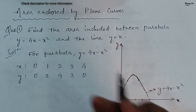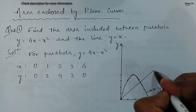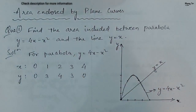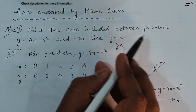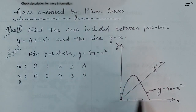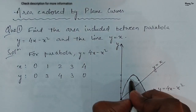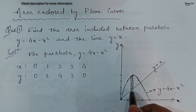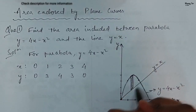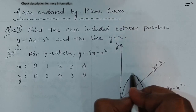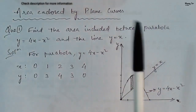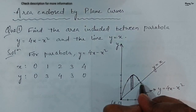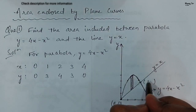Here you can see the area included between the parabola and the line. The area included is this shaded part. Taking a vertical strip, the bottom part of the strip lies on the line, so the lower limit is on the line y equals x. The upper limit of this strip is on the curve y equals 4x minus x squared. This strip moves from x=0 to a point we need to find.